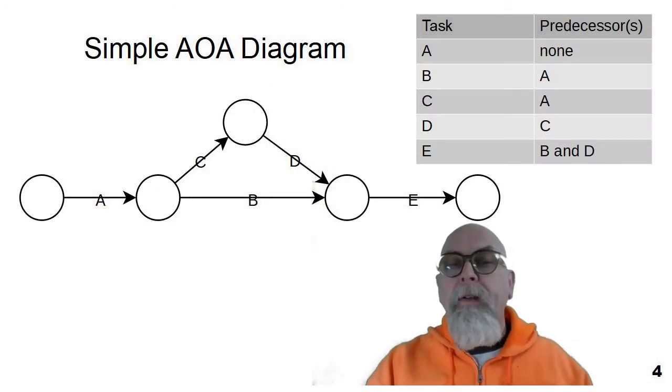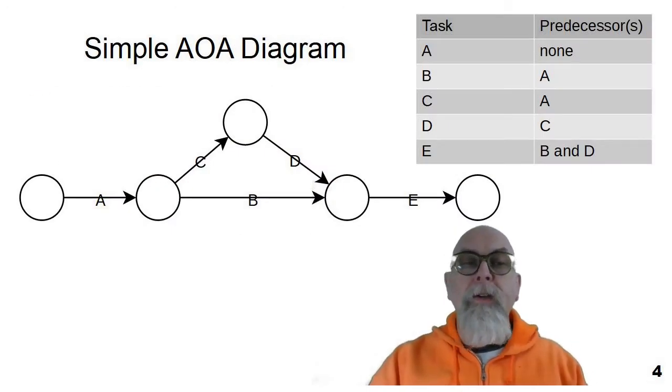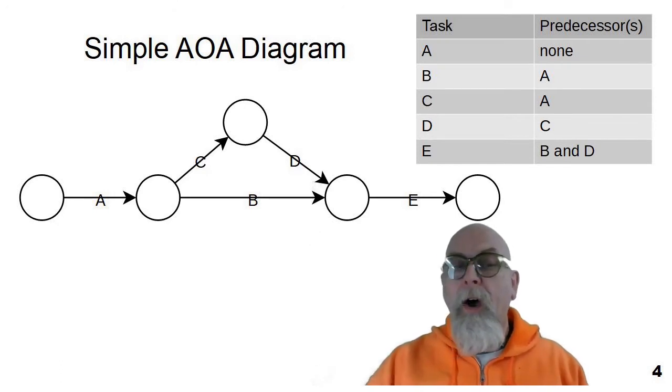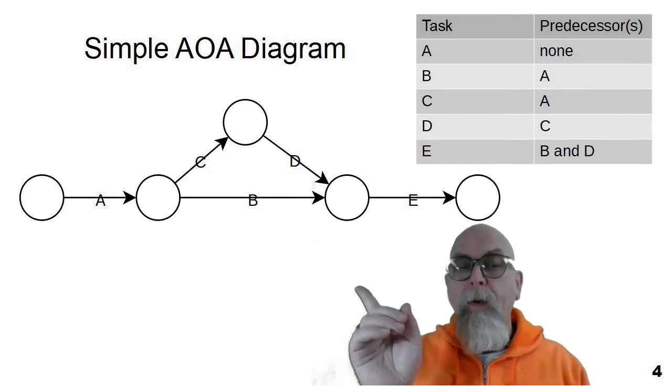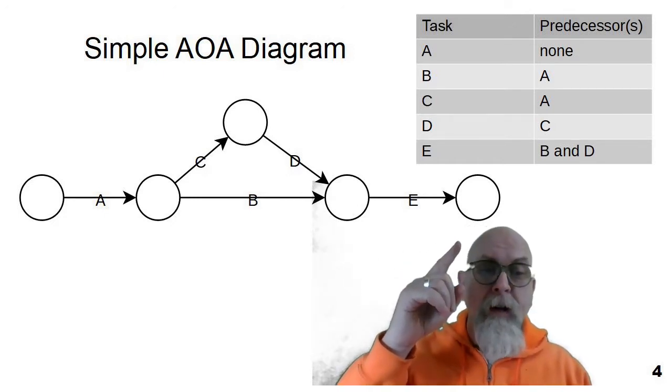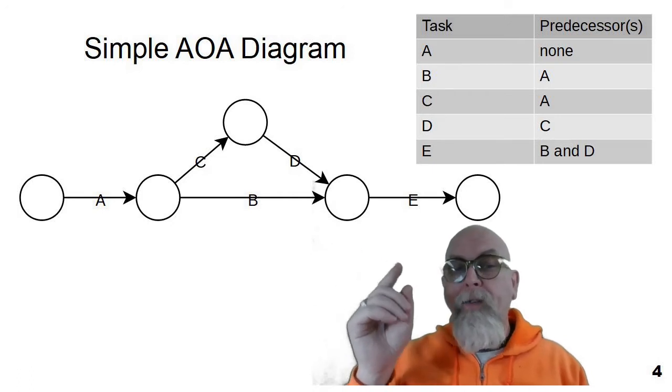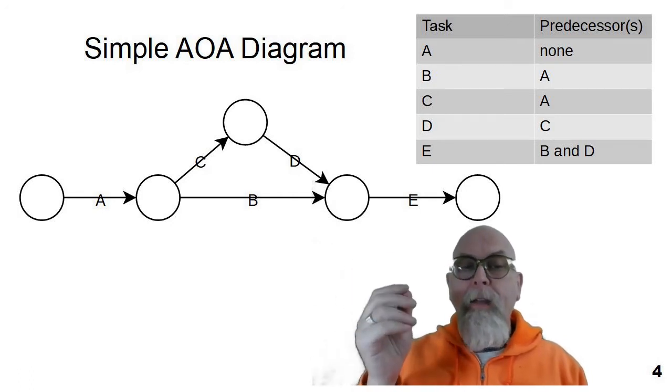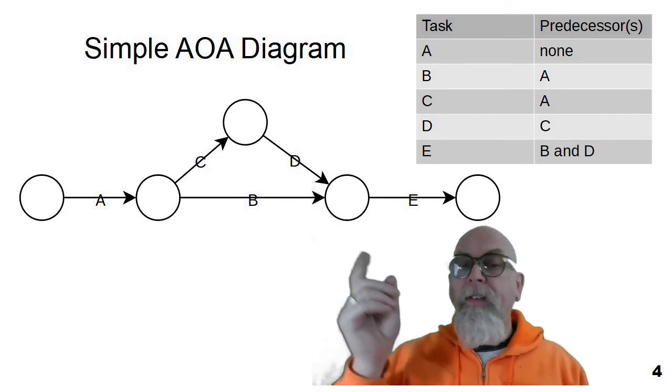Here we can see a simple AOA diagram. You can see that the tasks lettered A through E are represented by the arrow. So the first node over here on the far end represents the start. This node represents the terminus node, the end. And these nodes each represent a state throughout the network diagram.